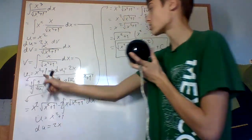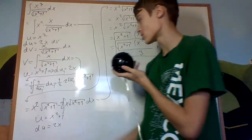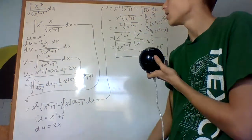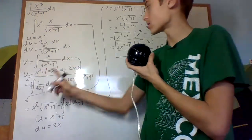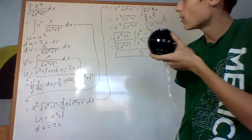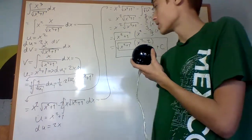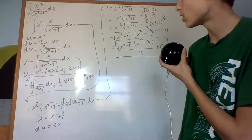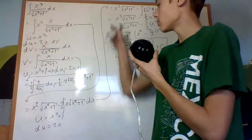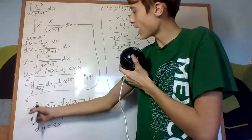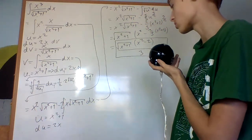Making the substitution u1 equals x squared plus 1 so that du1 is 2x dx, we see we have an x, so we multiply by a half and get one half the integral of 1 over the square root of u1 du1, which is pretty easy, giving one half times 2 times the square root of u1, which equals the square root of x squared plus 1. From that we do the integration by parts to get x squared times the square root of x squared plus 1 minus 2 times the integral of x times the square root of x squared plus 1 dx.